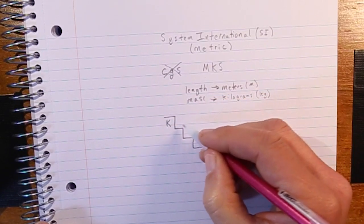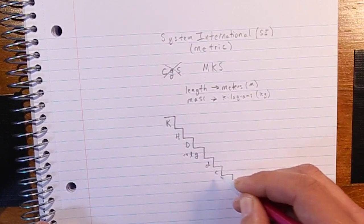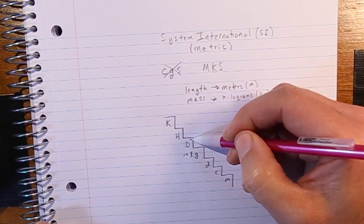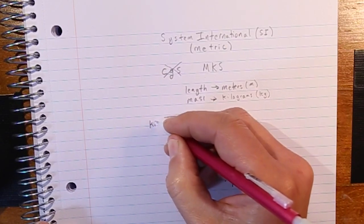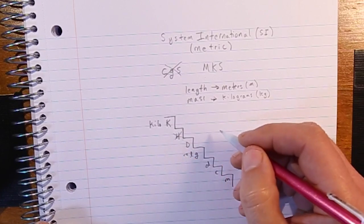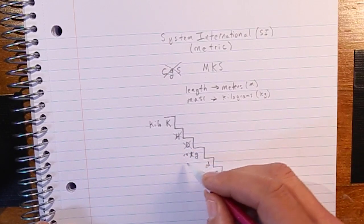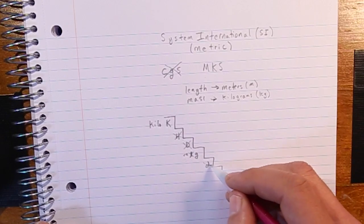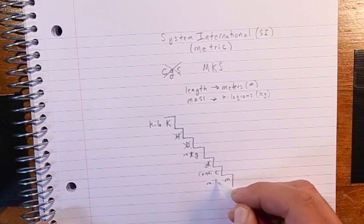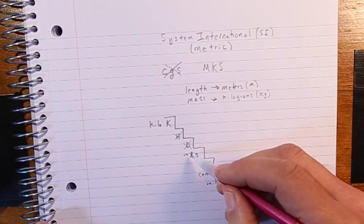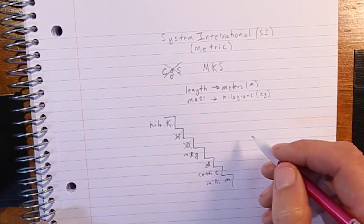There's a mnemonic for this: King Henry Drinks Milk Lemonade And Gatorade During Cold Months. The K is for kilo, H is for hecto (not used), D is for deca (also not used — just a placeholder). In physics we don't use liters, so we're just dealing with meters and grams. D for deci isn't used, but we do use centi and milli. When dealing with length, an 'm' by itself is meters, but when combined with milli, two m's give us millimeters.